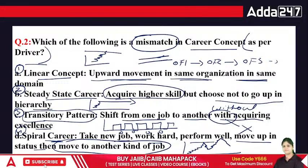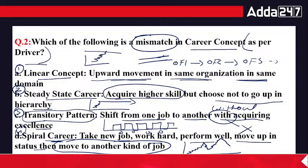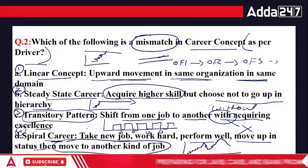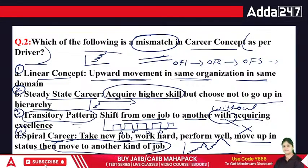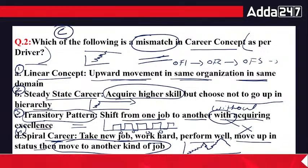These are the four career concepts given by Michael Driver. The third option is the wrong one — the statement about transitory career acquiring excellence is a mismatch. So C is the right answer.